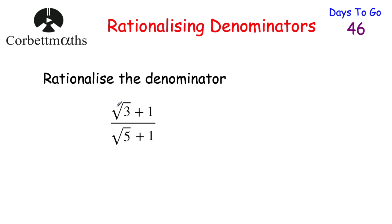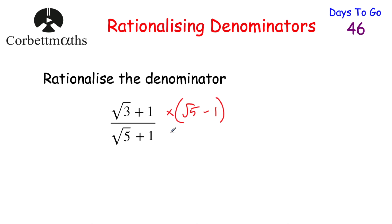Our last question says: rationalize the denominator of (root 3 plus 1) over (root 5 plus 1). We've got root 5 plus 1 on the denominator, so press pause now to have a go. To rationalize the denominator, we multiply both the numerator and the denominator by the conjugate of the denominator — taking root 5 plus 1 and changing the sign to get root 5 minus 1.